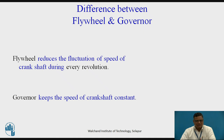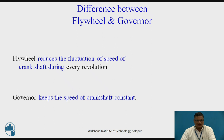On the other hand, governors keep the speed of the crankshaft constant. In the case of turbines coupled to electrical generators, we need constant speed of the generator shaft because the frequency of the electricity produced depends on the shaft speed. If the generator shaft rotates at different speeds, the frequency of the generated electricity will vary. So governors are used to control the speed of the turbine shaft, which ultimately controls the speed of the generator shaft.